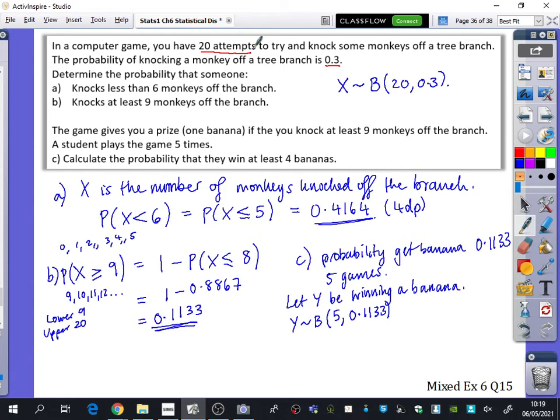So this person is playing this game five times in a row, and they're hoping that out of these five games, they want to win at least four bananas. Now, first of all, if you've got basically a 10% chance of getting a banana, and you're going to play the game five times, do you think that there's going to be a high chance that you get four or more bananas? It's going to be pretty rare, right? That's my prediction. So we're going to say, what is the probability that Y is at least 4?